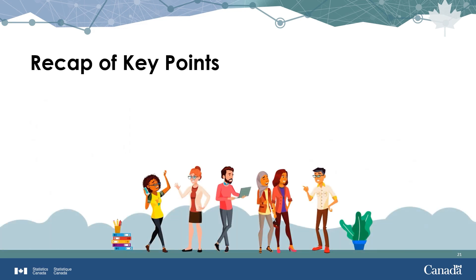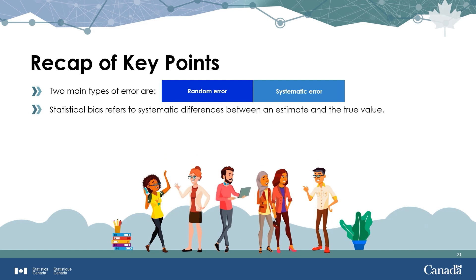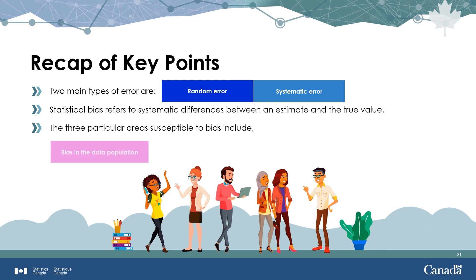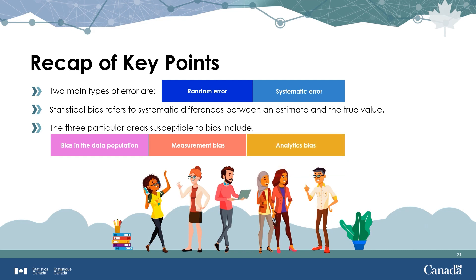To recap, there are two main types of error: random error and systematic error. Statistical bias refers to differences between an estimate and the true value. The three areas susceptible to errors leading to bias include: bias in the population covered by the data, bias in the measurement of concepts of interest, and bias in the analysis or methods used.